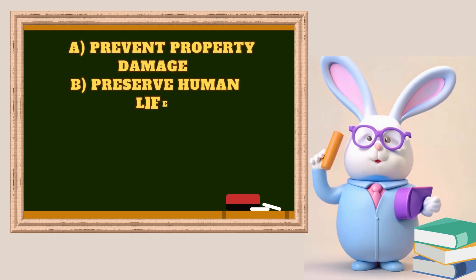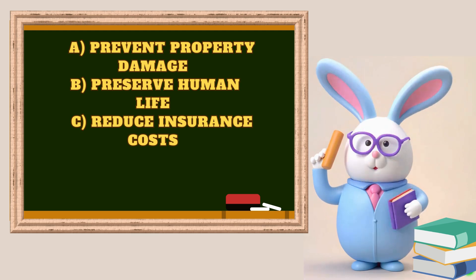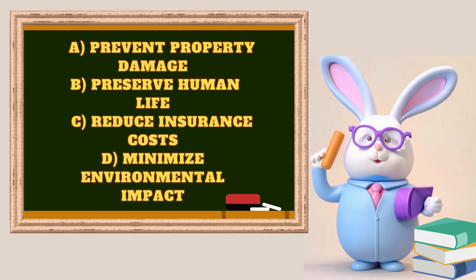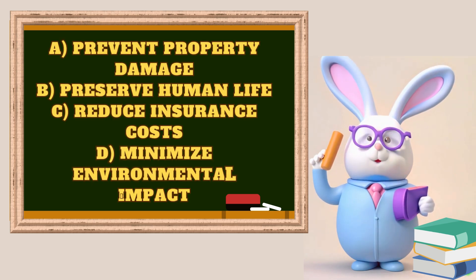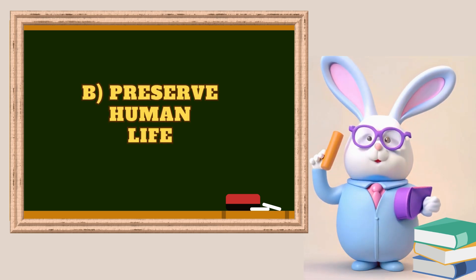Question 1: What is the primary objective of fire safety? A. Prevent property damage. B. Preserve human life. C. Reduce insurance costs. D. Minimize environmental impact. The answer is B, preserve human life.